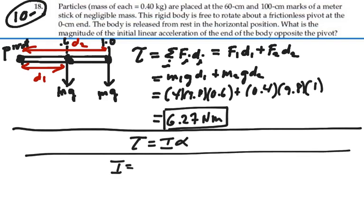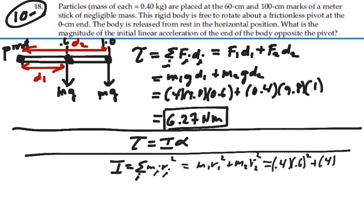Moment of inertia would be equal to the summation of every mass multiplied by its distance from the axis of rotation squared. And in this case, that would be mass 1, distance 1 squared, plus mass 2, distance 2 squared. And that would be 0.4 times 0.6 squared. In this case, the R happens to be equal to the same as D, plus 0.4 times 1 squared. And that should give us our moment of inertia.